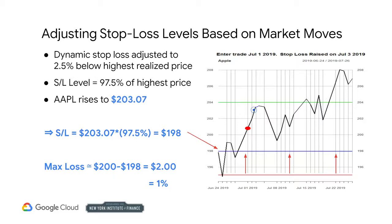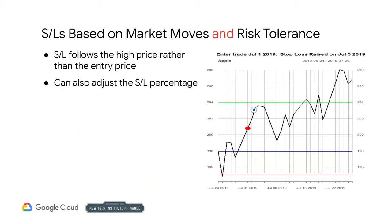Now, if the trade continues to move in your favor, you may simply get profited out. But if the trade moves against you, you will only stand to lose $2 or 1%. So the first type of dynamic stop loss is where you raise the stop loss so it trails the high price, rather than the entry price.